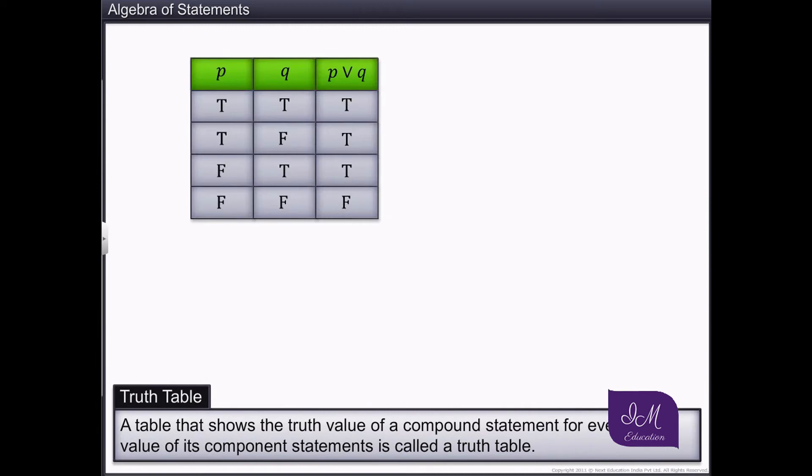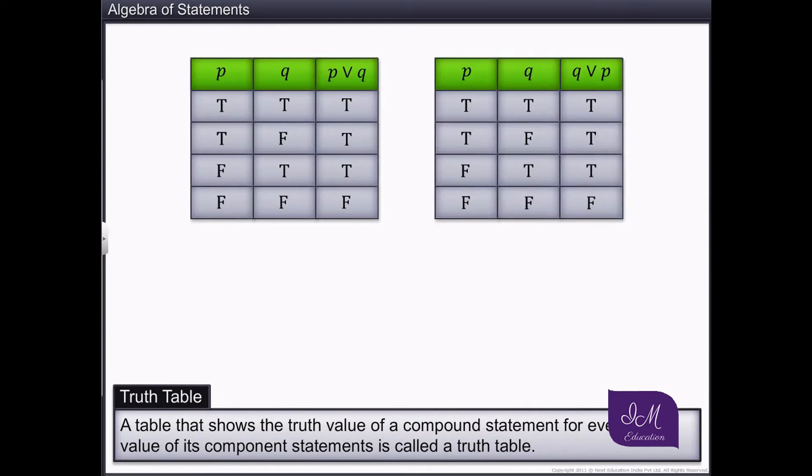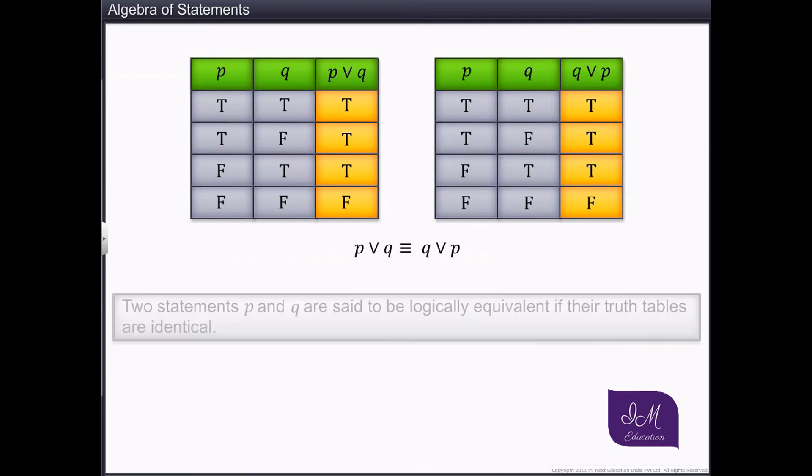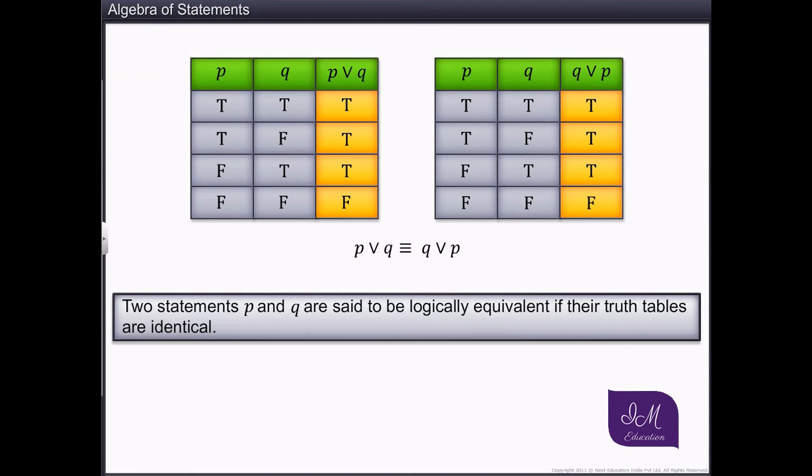Here, the truth values of compound statements P or Q and Q or P are equal. Such statements are called equivalent statements. In general, two statements P and Q are said to be logically equivalent if their truth tables are identical.